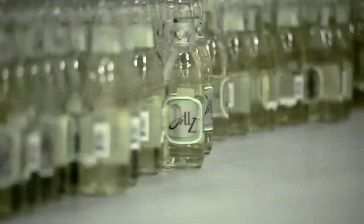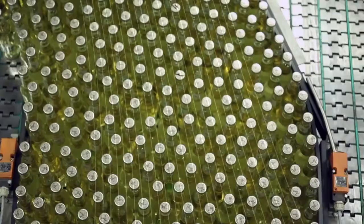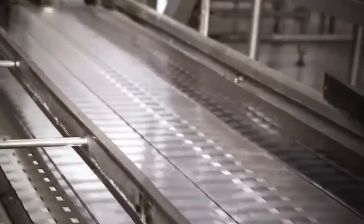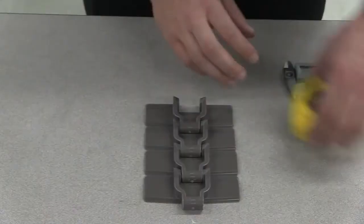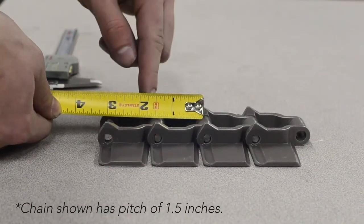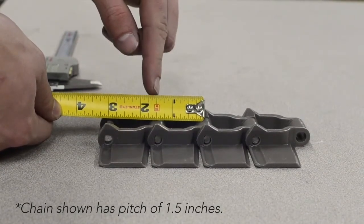If the chain series number is illegible or unreachable due to running production, we can identify the chain by measuring the pitch, top plate thickness, and width of the chain. To measure the pitch, use a tape measure and measure from the centerline of one pin to the centerline of an adjacent pin.